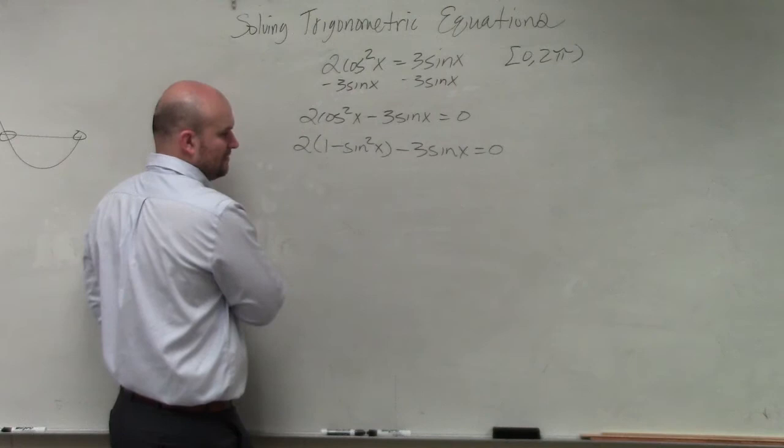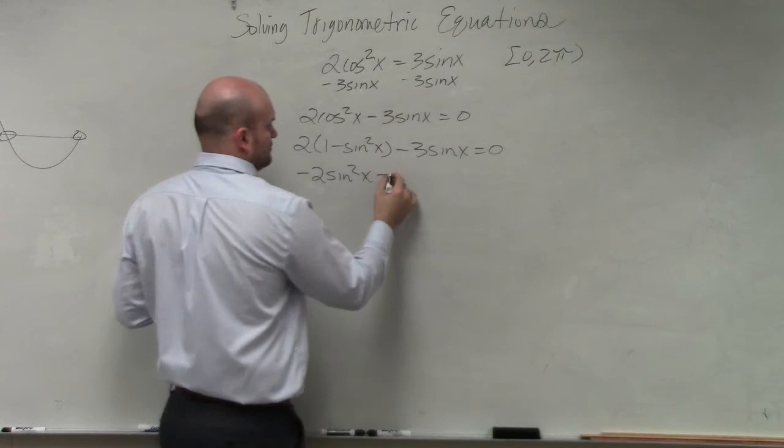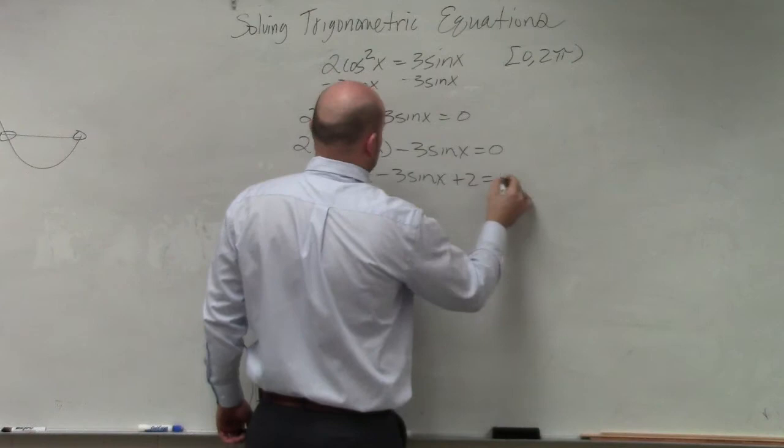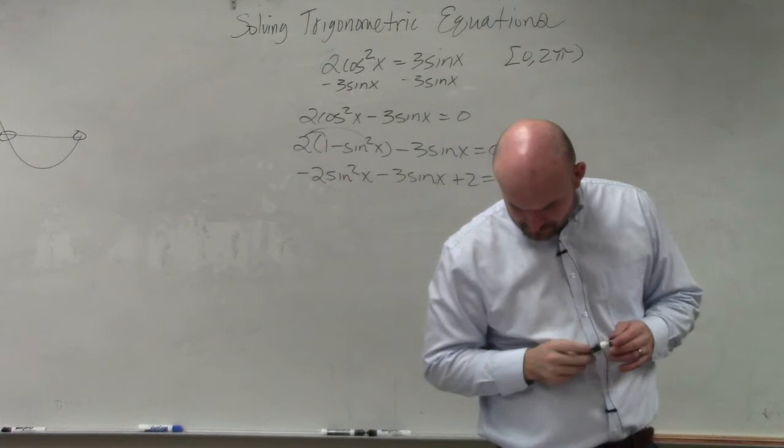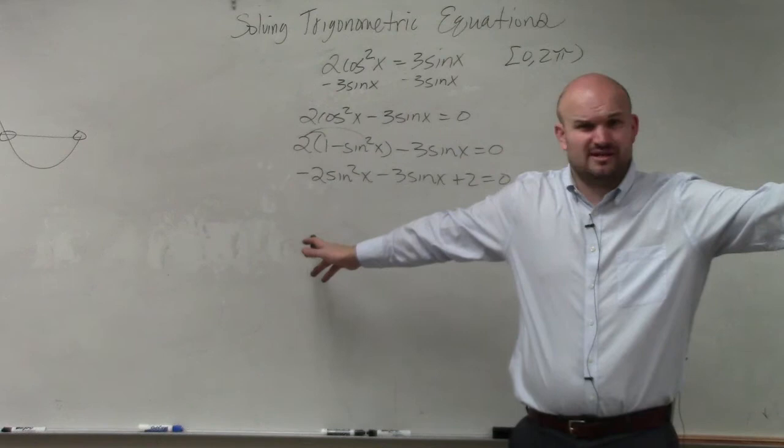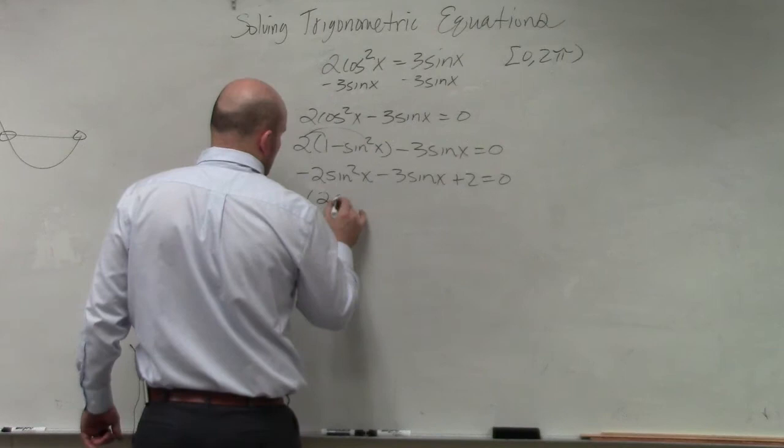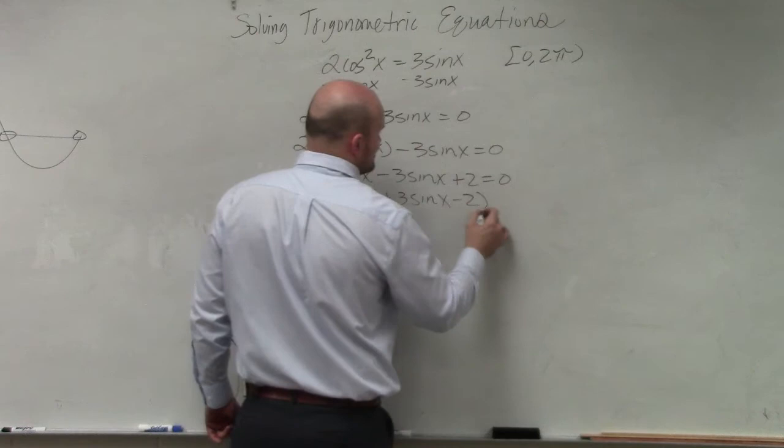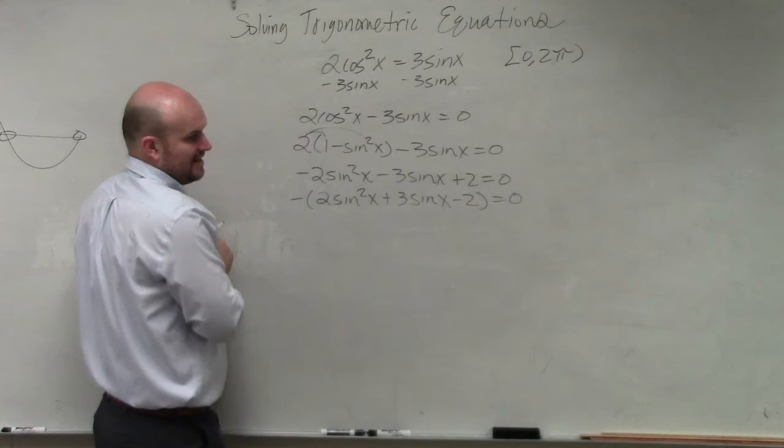Then I can just go ahead and rewrite this. So I applied distributed property and then I kind of rewrote everything. And then do you guys remember in that one factoring problem we did last class period when you had a negative? I said I don't like factoring with negatives, right? So what I prefer to do is I prefer to factor out that negative. So I'm left with 2 sine squared of x plus 3 sine of x minus 2 equals 0. Technically, I could divide that negative out, and that's not going to affect my answer.